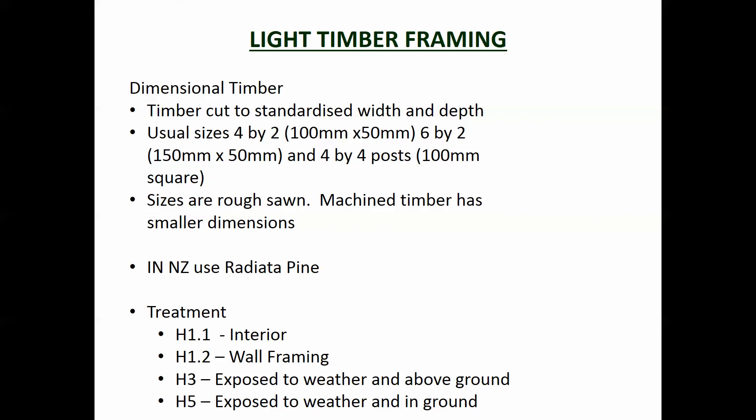Light timber framing is dimensional timber — in other words, timber cut to standardised widths and depth. The usual size is what's called a 4x2, that's 4 inches by 2 inches. Americans would call it 2 inches by 4, which is 100mm by 50. Then there's 6x2, which is 150 by 50, or 4x4 posts, which is 100mm square.